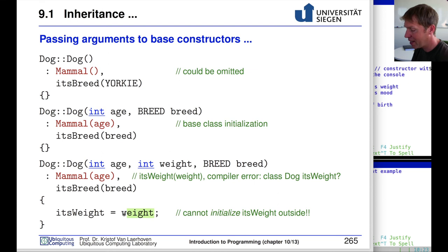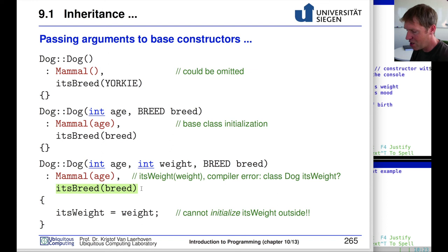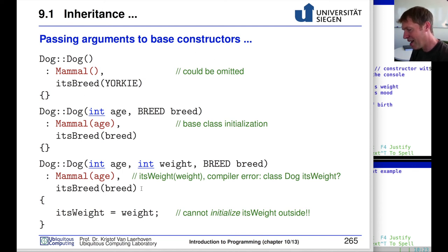To set the weight in this third constructor, we assign it inside the constructor body using the set weight function or by directly assigning to its weight — this works because weight is in the protected section of mammal and is therefore accessible from dog. It cannot be initialized in the initializer list, but it can be assigned in the body. Breed, being a member of dog, can still be initialized in the initializer list as before. These are the different ways to handle constructors and initialize data members across inheritance levels.